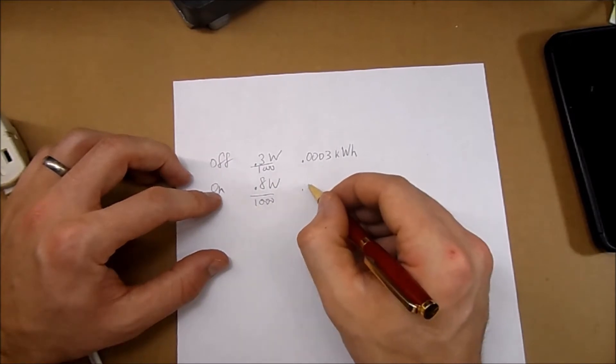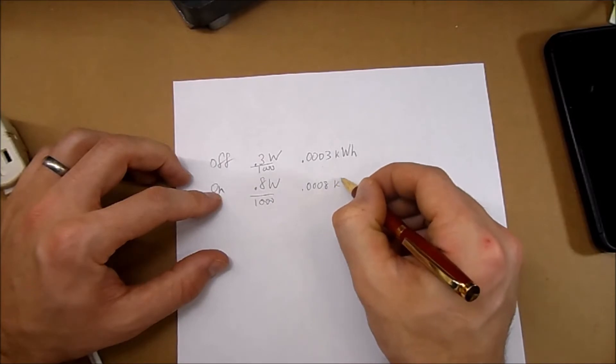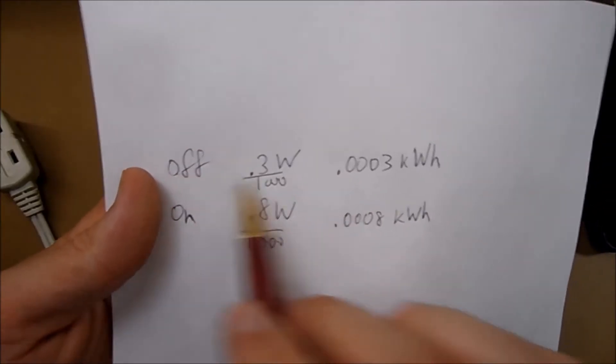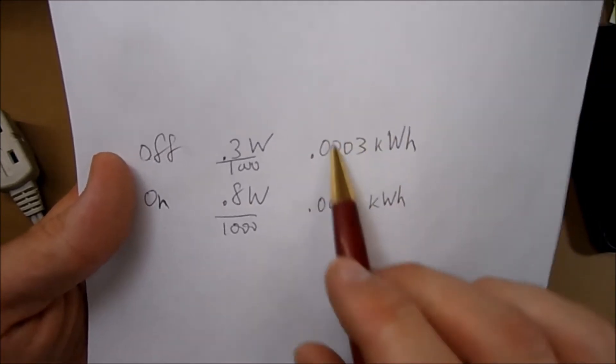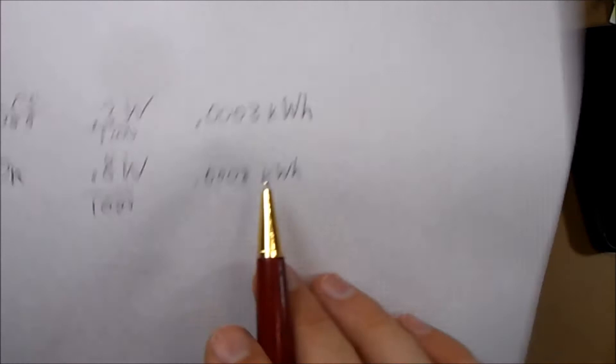If the Sonoff was in an off position for one hour it would use this many kilowatt hours, and if the Sonoff was on for one hour it would use this many kilowatt hours.